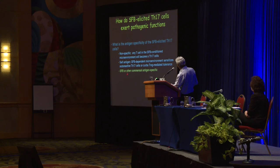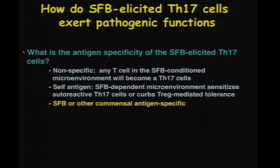Surprisingly, when we ask what is the antigen specificity of SFB-elicited TH17 cells, we find that they are SFB-specific by and large, and maybe in other cases there could be specificities for other commensals. That does not rule out that other mechanisms may not be involved. In the colon, we find very few TH17 cells with this tetramer-positive kind of specificity, so there may be different mechanisms — perhaps some kind of environmental induction of TH17 cells as well. That remains to be figured out.